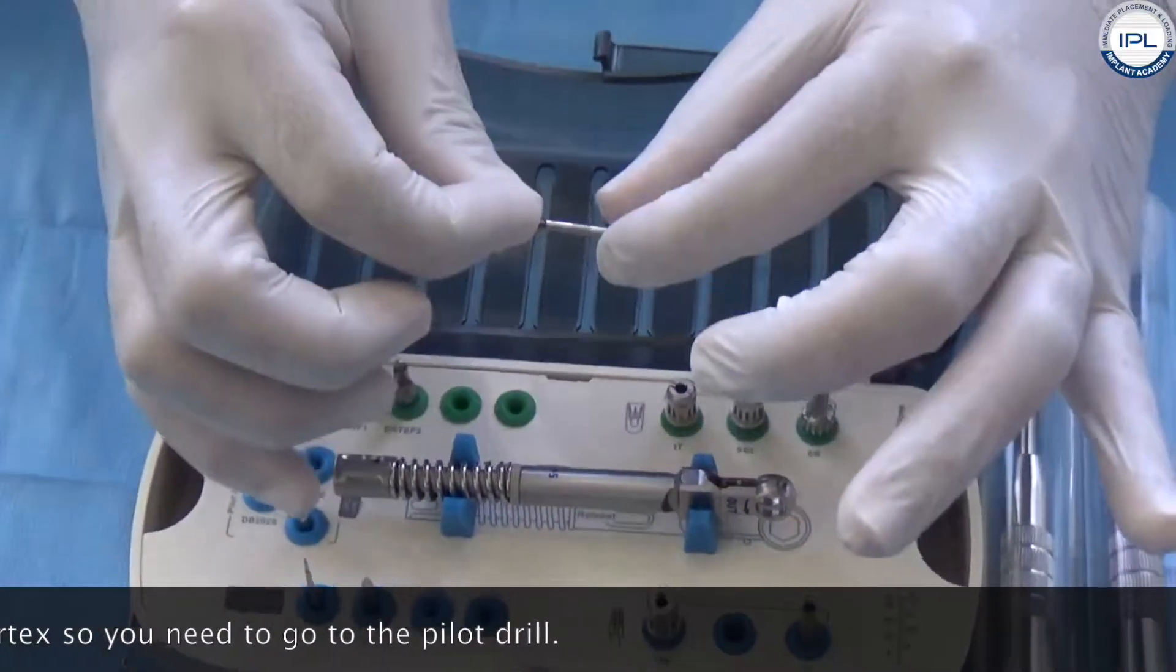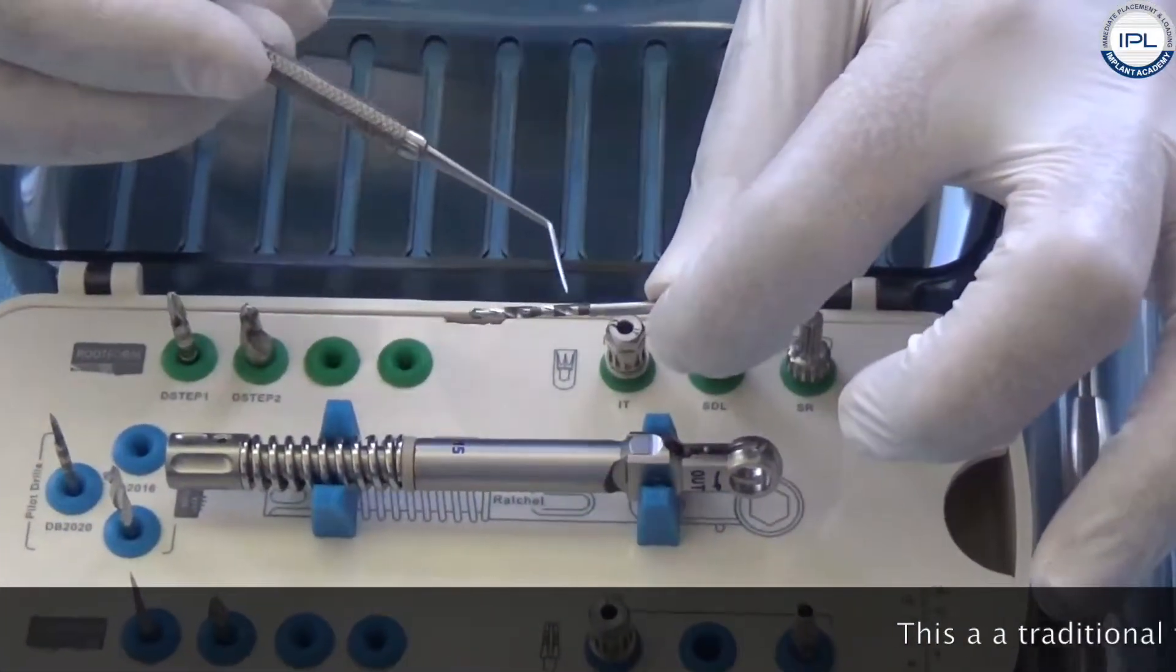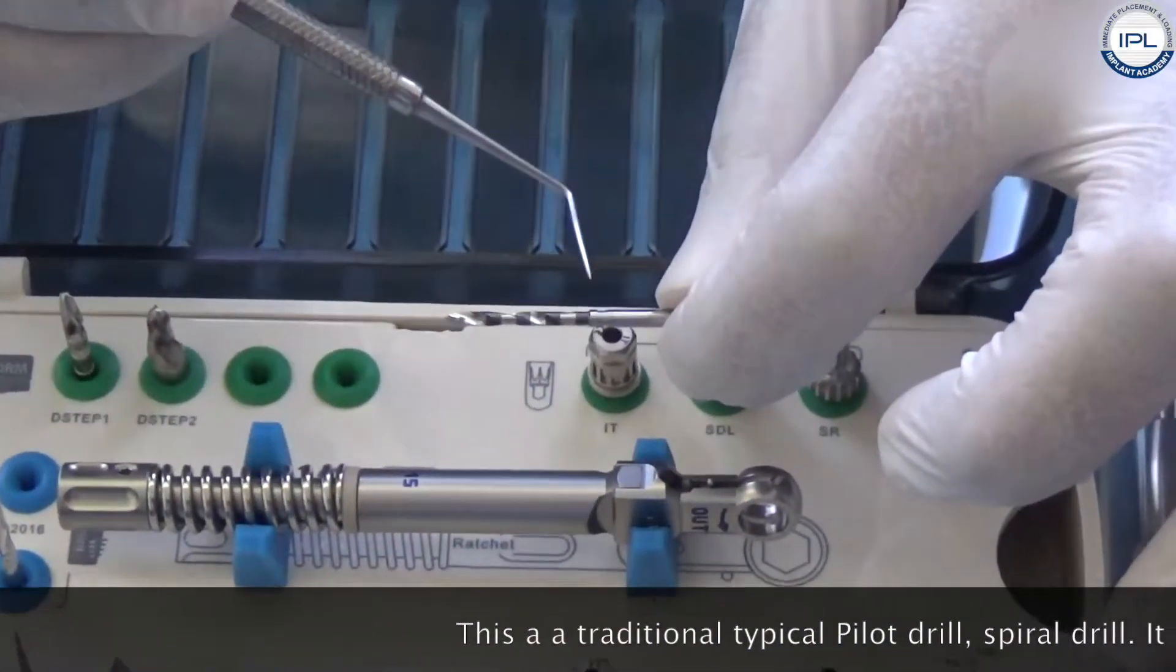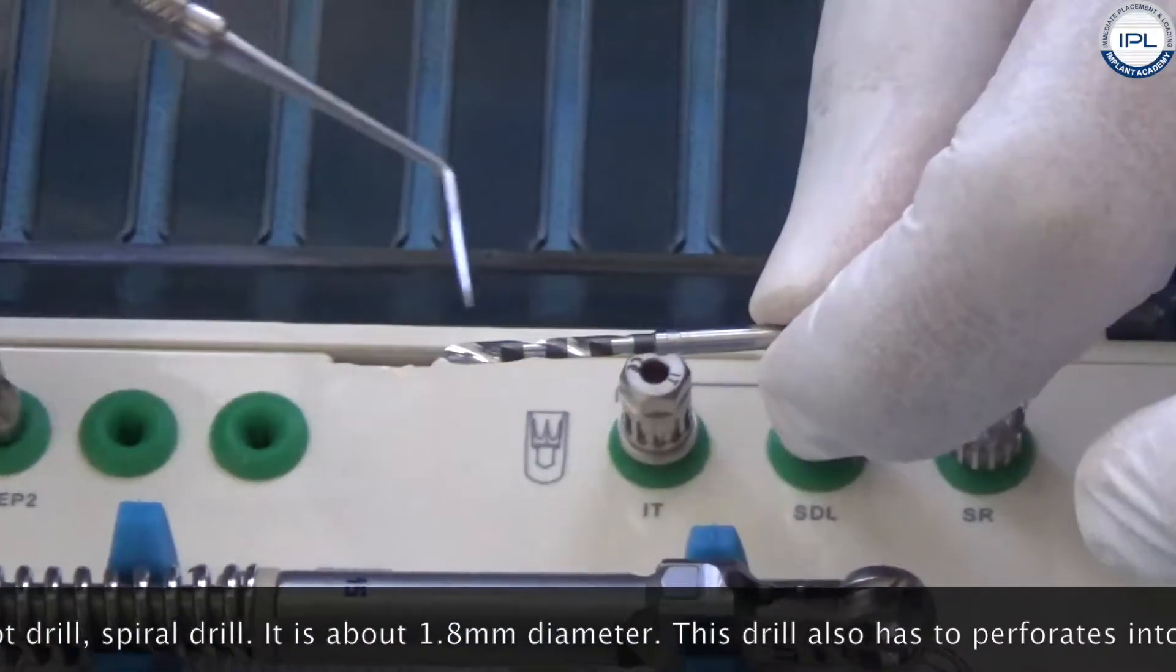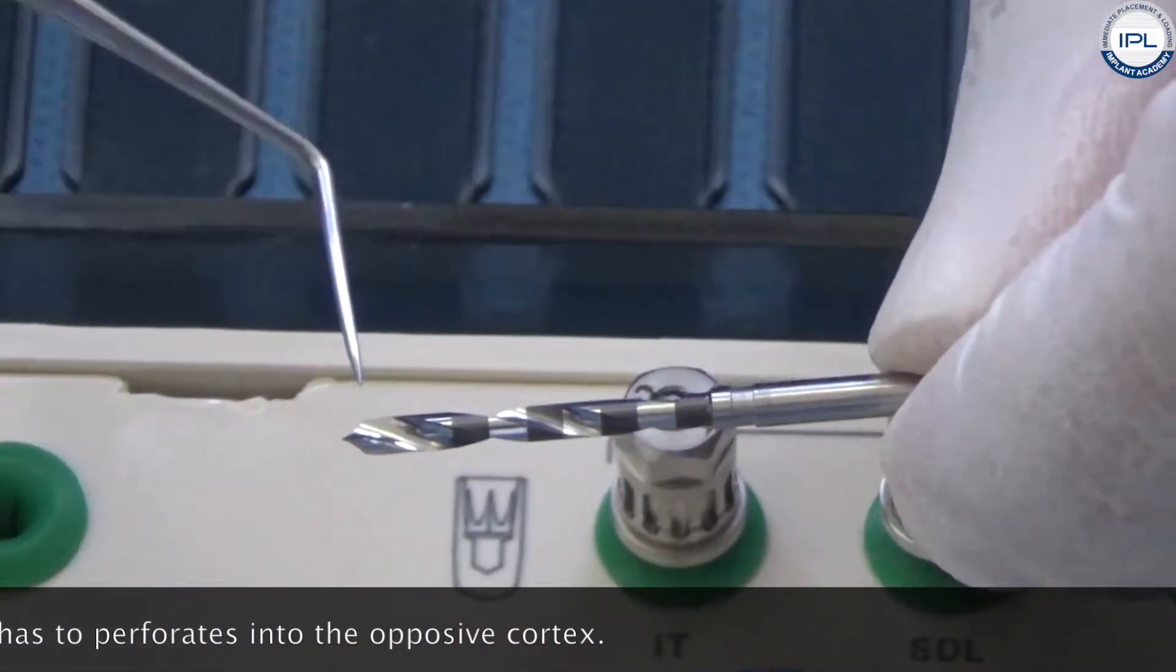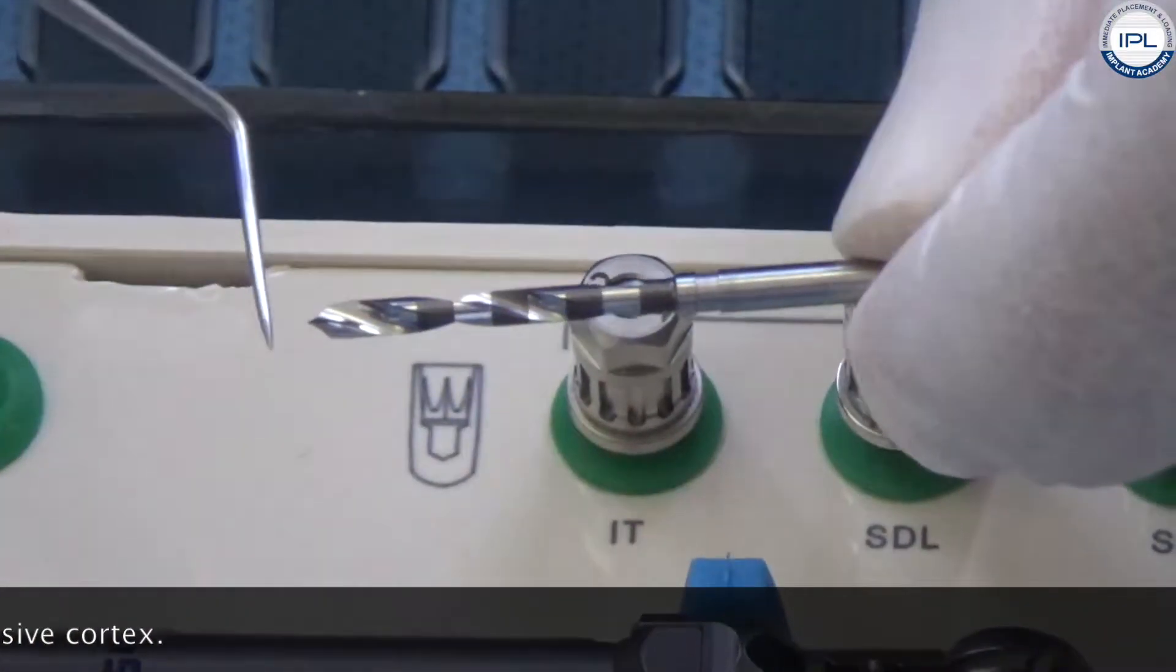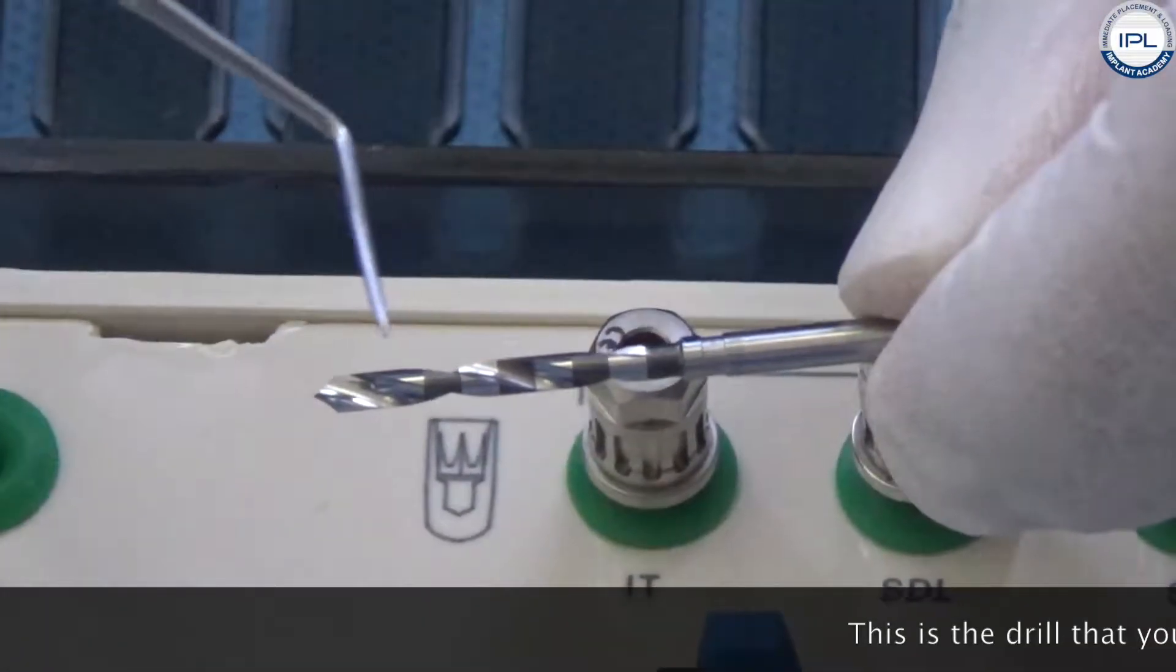So you need to go to your pilot drill. This is a traditional typical pilot drill spiral drill. It is about 1.8 millimeters in diameter and this drill also has to perforate into the opposing cortex. Only then your basal implant will go and engage into the opposing cortex. So this is the drill that we do for basal.